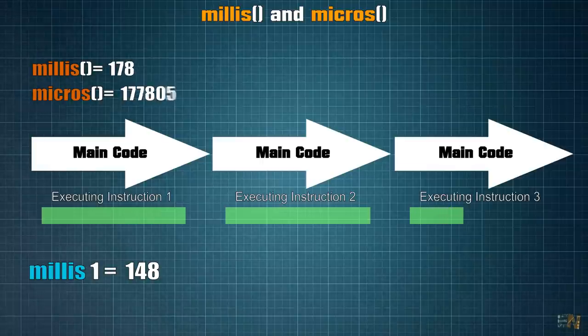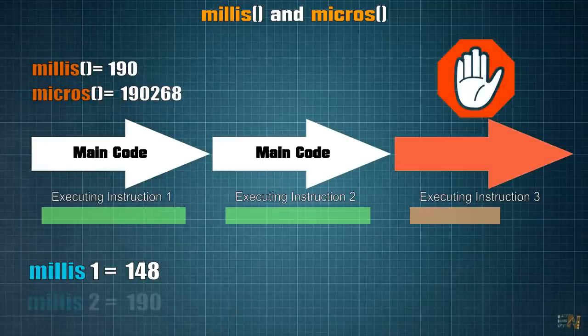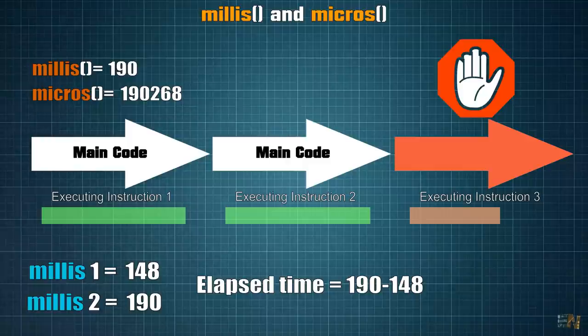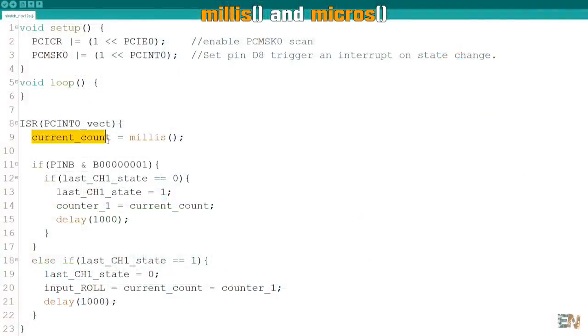So what I want to say is that you can use for example the millis function like this inside of the ISR. But have in mind that its value would be the value that it had the time the interruption was triggered. As a consequence, the delay function does not work neither because it is based on the operation of the millis function.